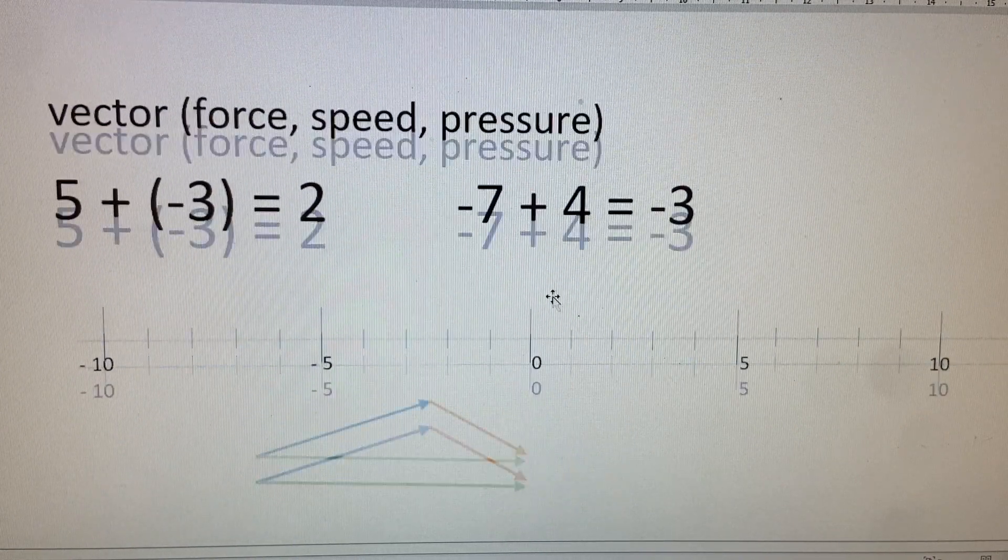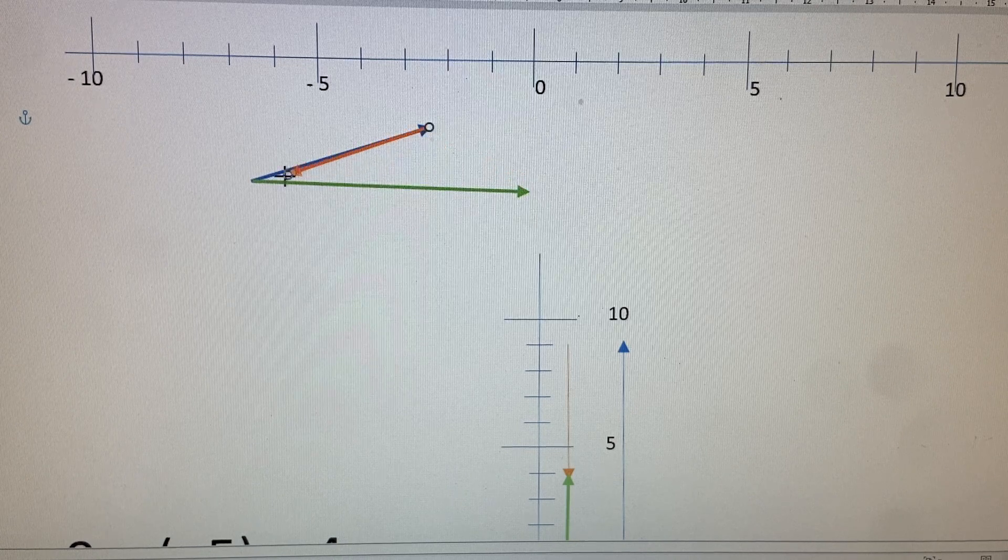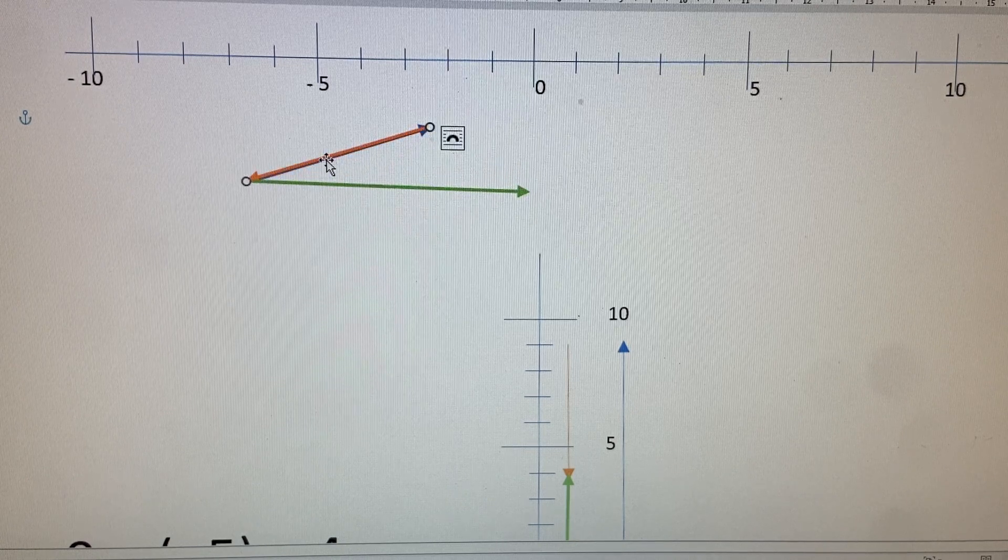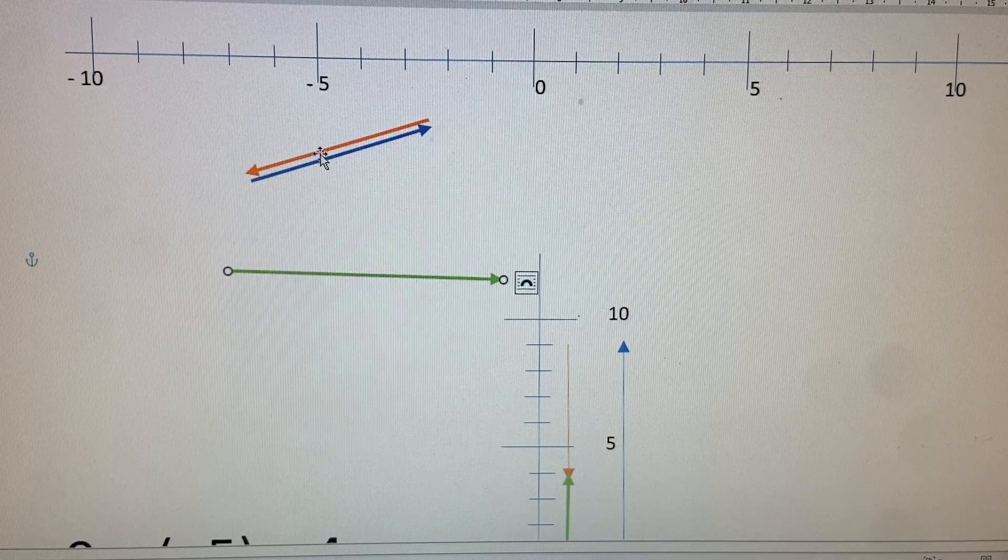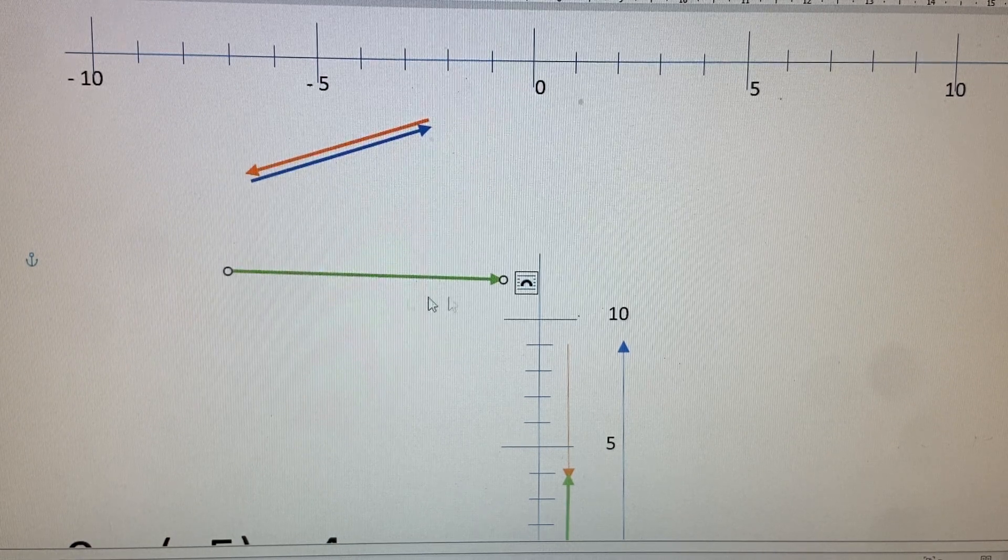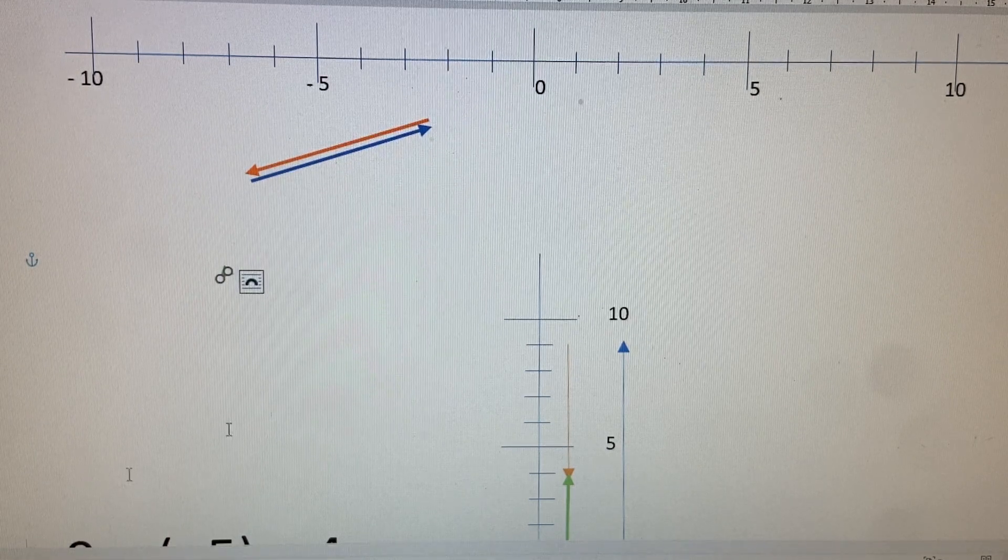But for that, vectors need to be pointing in the same direction and having the same magnitude. And then the blue and the green cancel, or the blue and the red cancel each other out. And then there is no resultant vector at all.